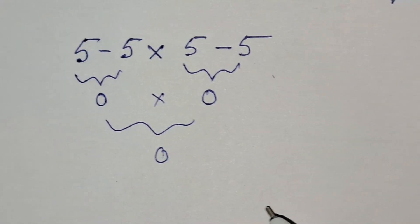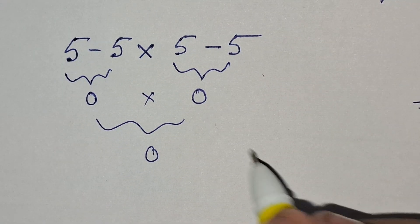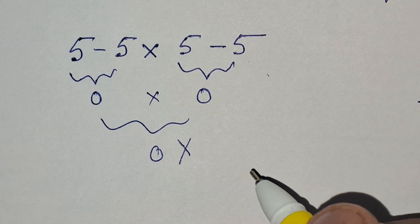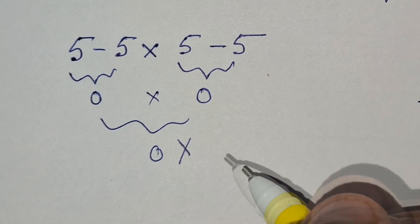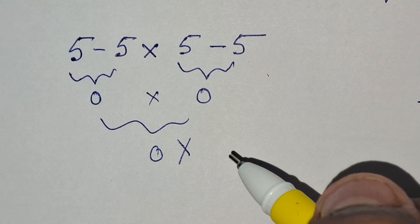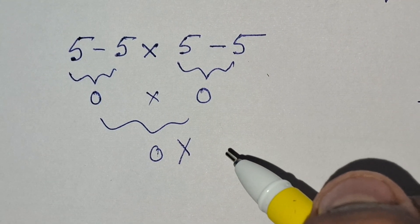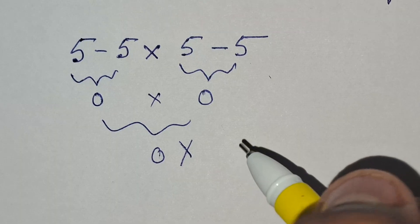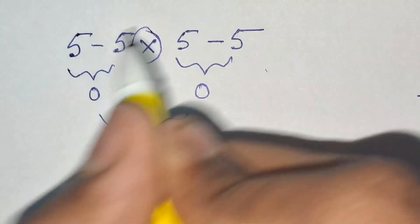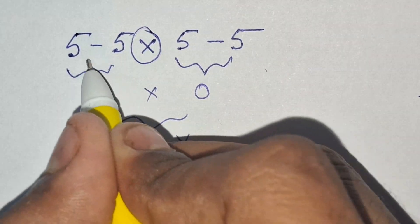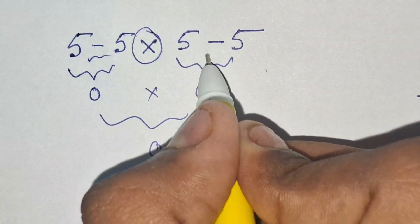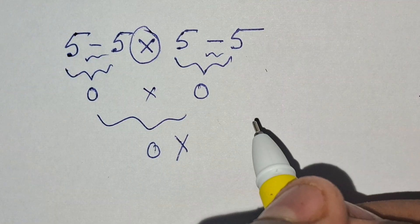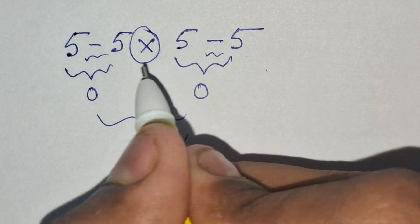But that's not the correct answer for the expression. According to the order of operations, which is called PEMDAS, multiplication has greater priority than subtraction. So we have to solve the multiplication first, then this subtraction, and then this. Let's apply this rule and find the value of this expression.